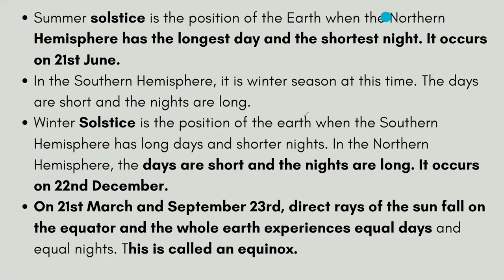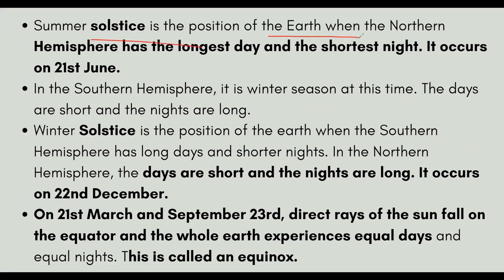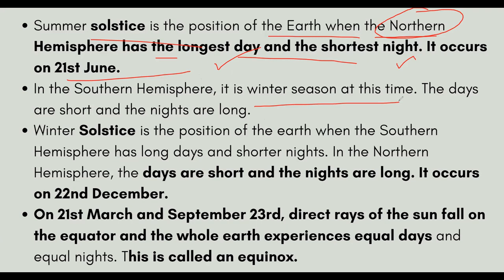The summer solstice is a position when the Earth is moving such that the northern hemisphere is tilted towards the sun. The sun is at its highest point over the northern hemisphere. More sunlight falls there, resulting in the longest day and the shortest night. At that time, it will be winter in the southern hemisphere, with shorter days and longer nights.